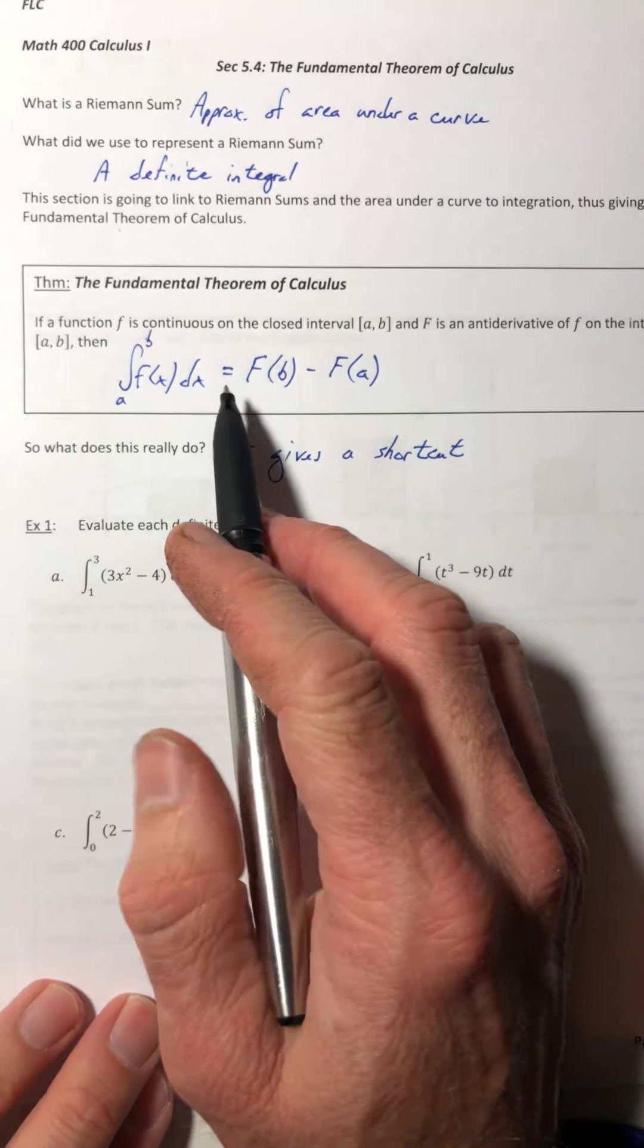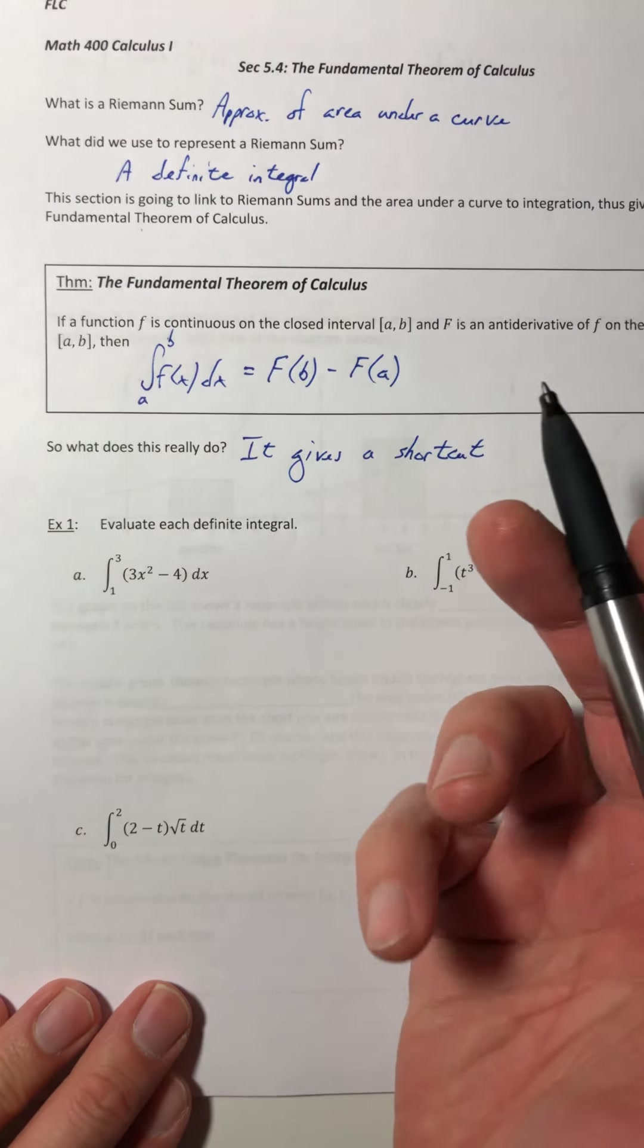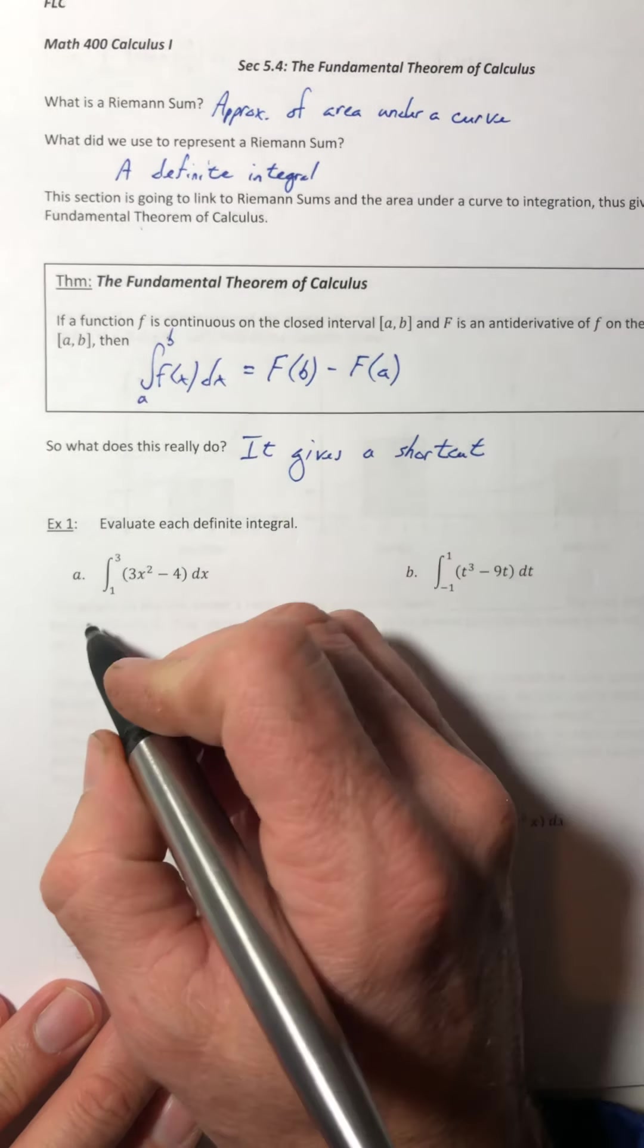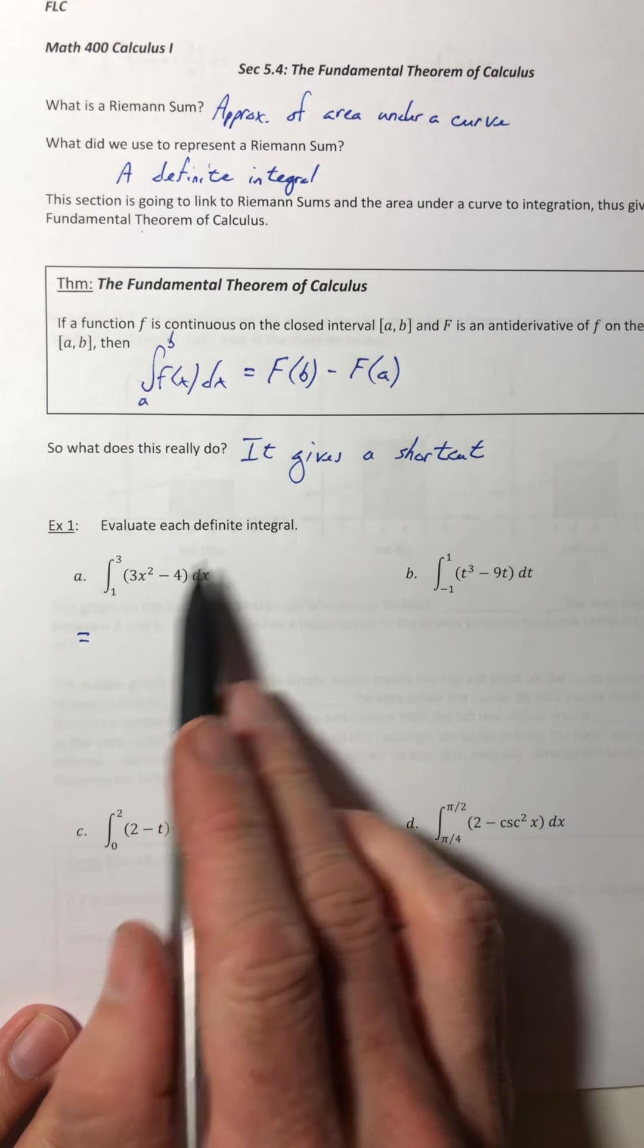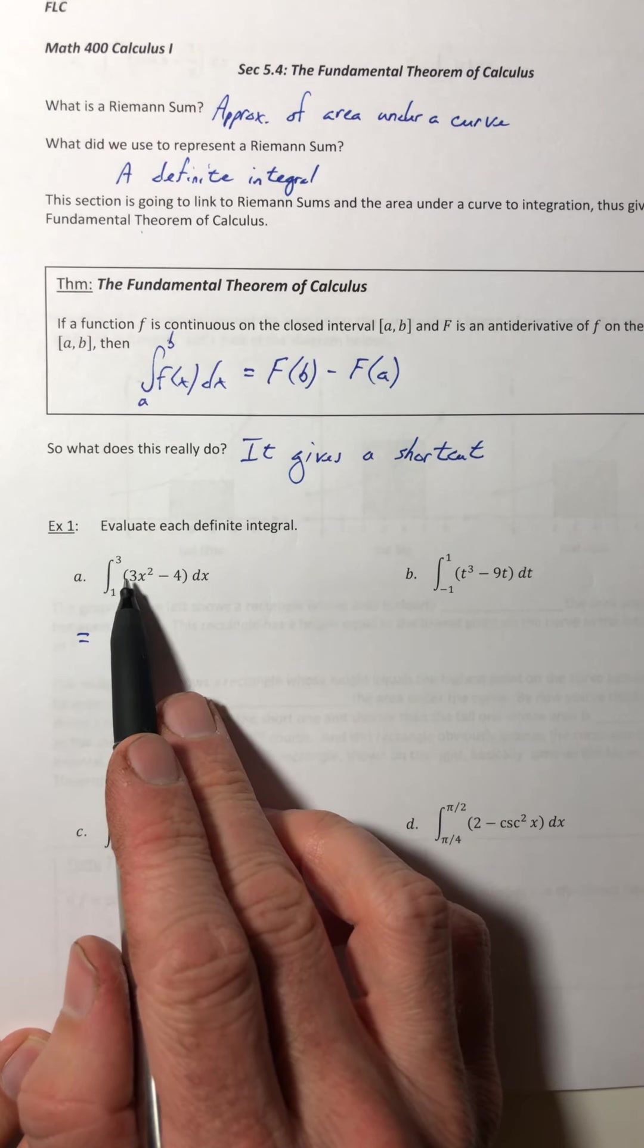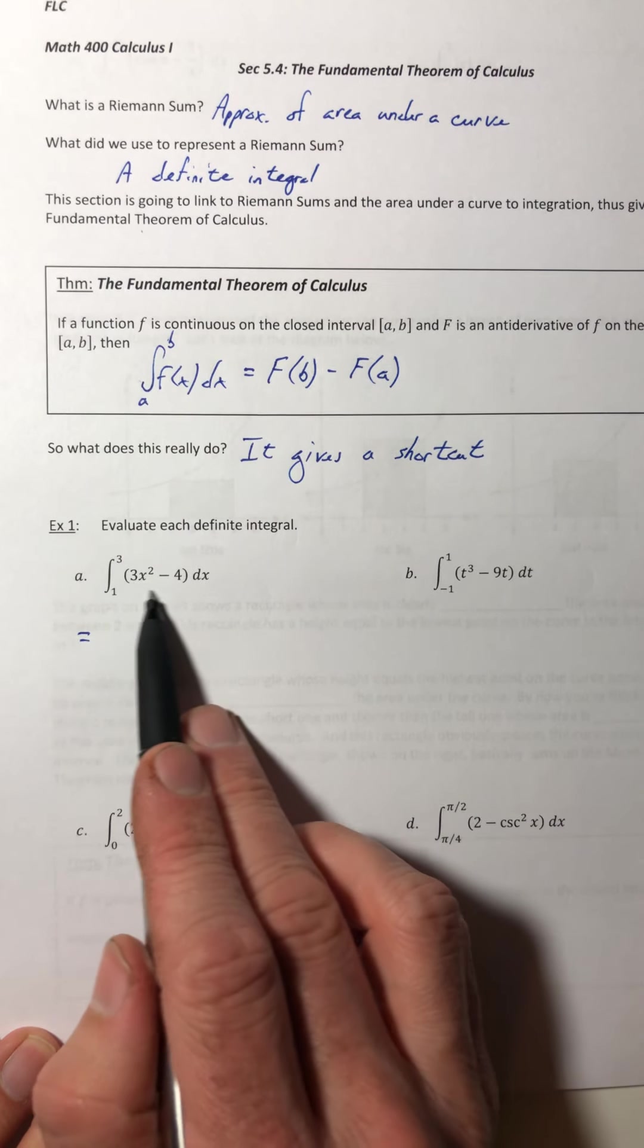So before when we had those, we had to get the area of those rectangles, get the sum, then take the limit as n went to infinity. It was a pretty lengthy process, one that we don't want to do eight times. So instead, they figured out we can just do this and it's a lot faster. So let's go ahead and do it. We're going to evaluate these.